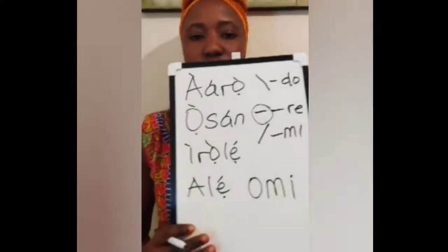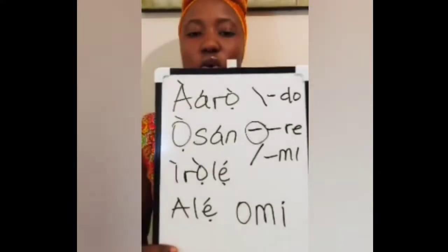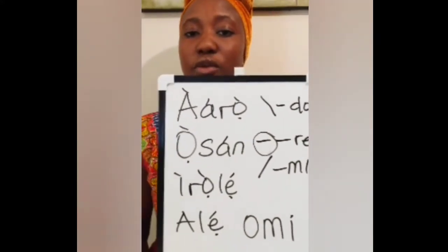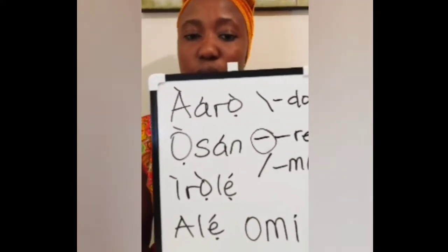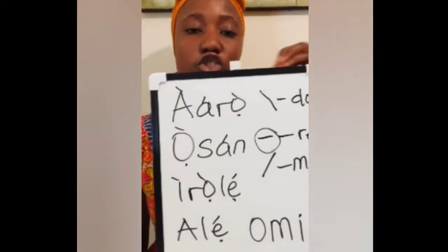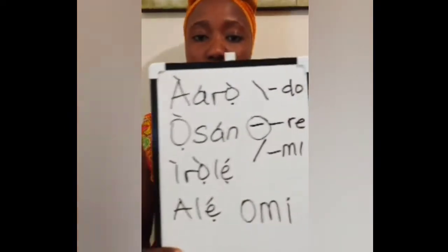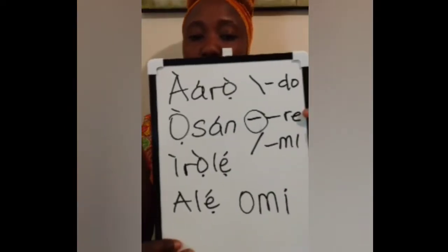When you see any word that has no tone mark on it, understand that it is RE. So if I write this word — OMI — when you see a word like this with no marks, you understand that it is RE-RE. Any word that you see in Yoruba with no signs on them, know that it is RE, which is the middle one.